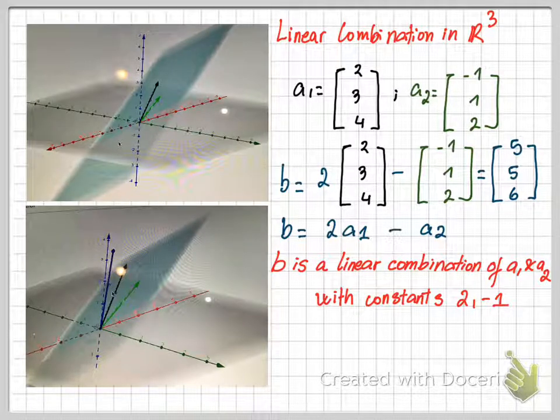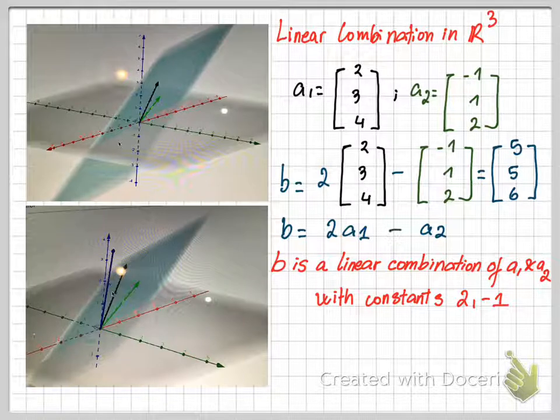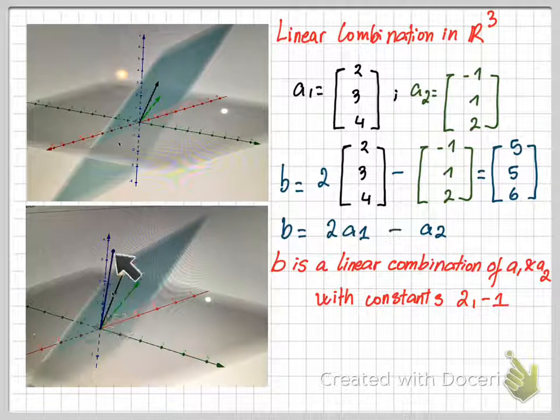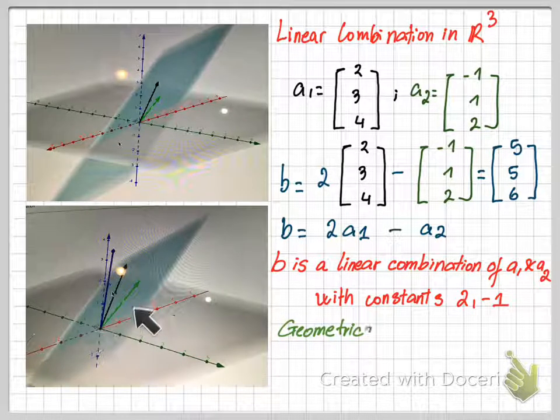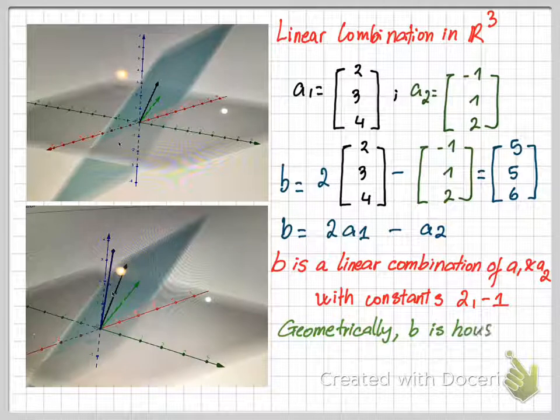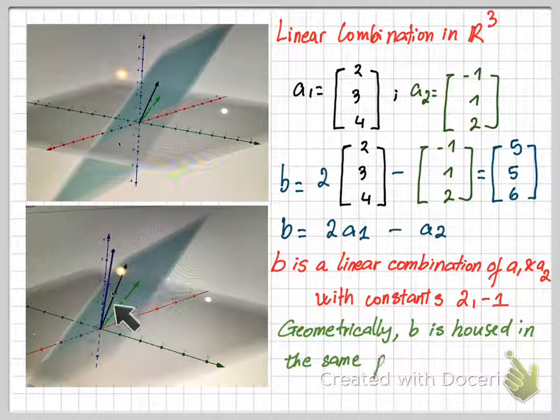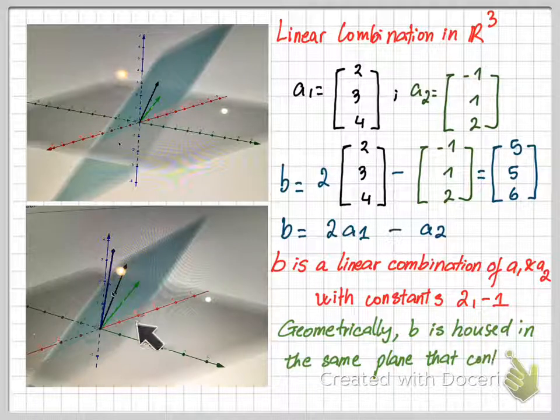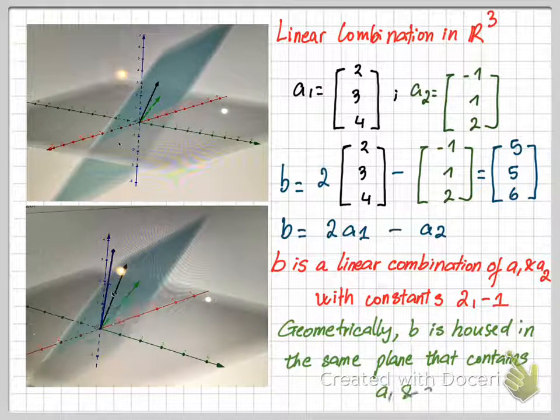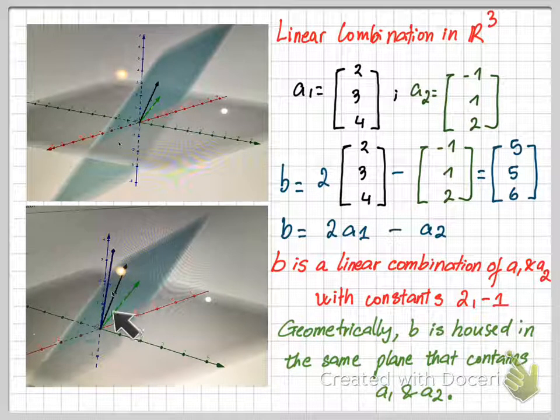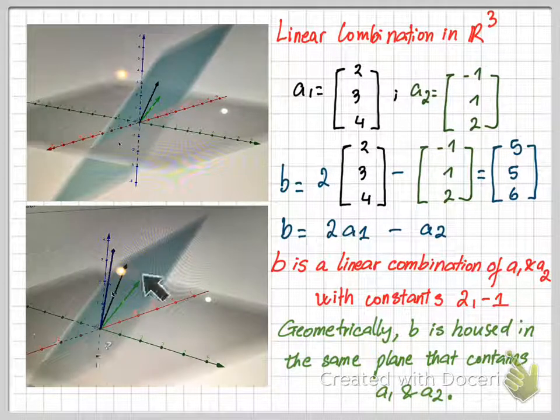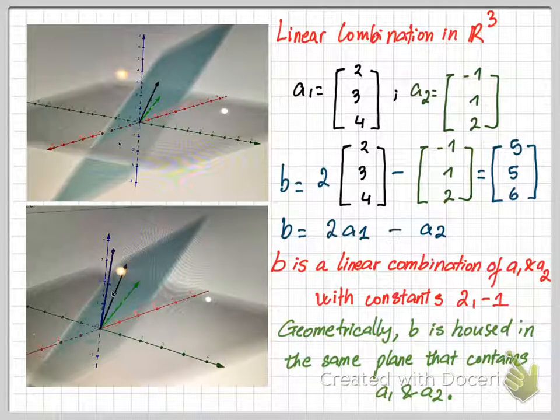Looking at the graph, vector B is a linear combination of A1 and A2. B is a vector housed in the plane that contains vectors A1 and A2. The two vectors A1 and A2 define a plane, and B is in the same plane that contains A1 and A2.